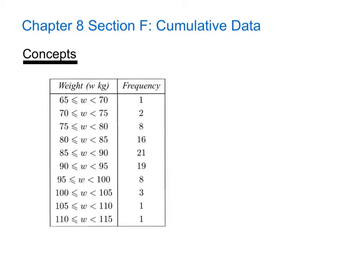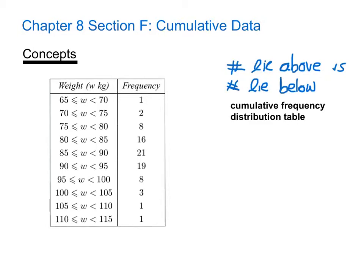When we have data values like this, it's sometimes helpful to know how many values lie above a particular value and how many values lie below that particular value. We can find this information out by constructing a cumulative frequency distribution table and a cumulative frequency graph.